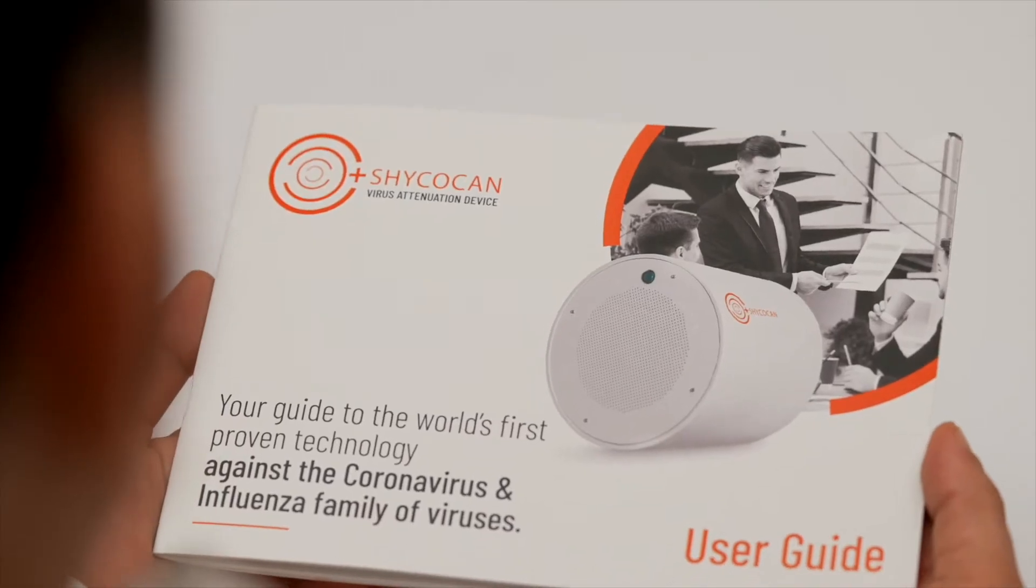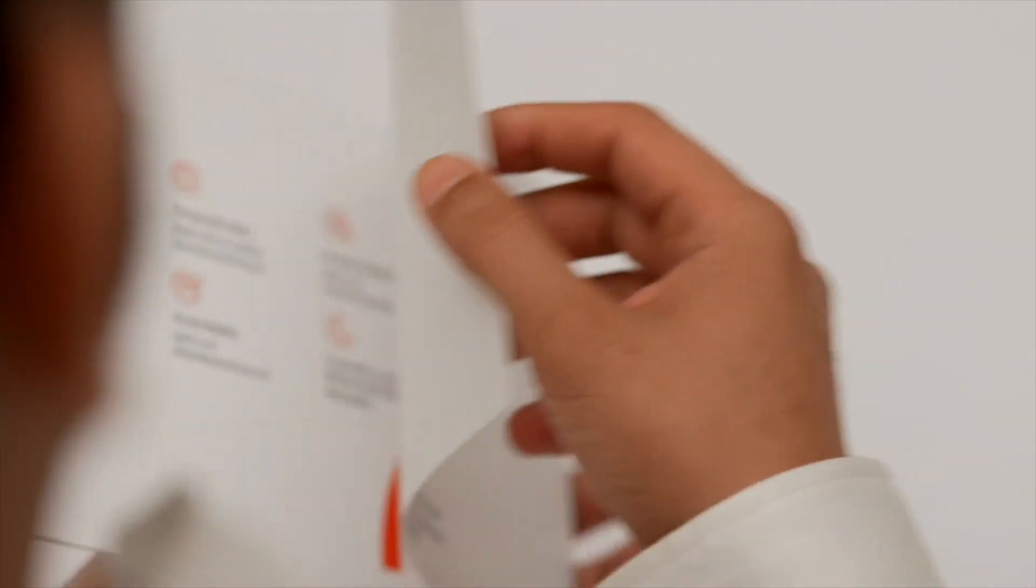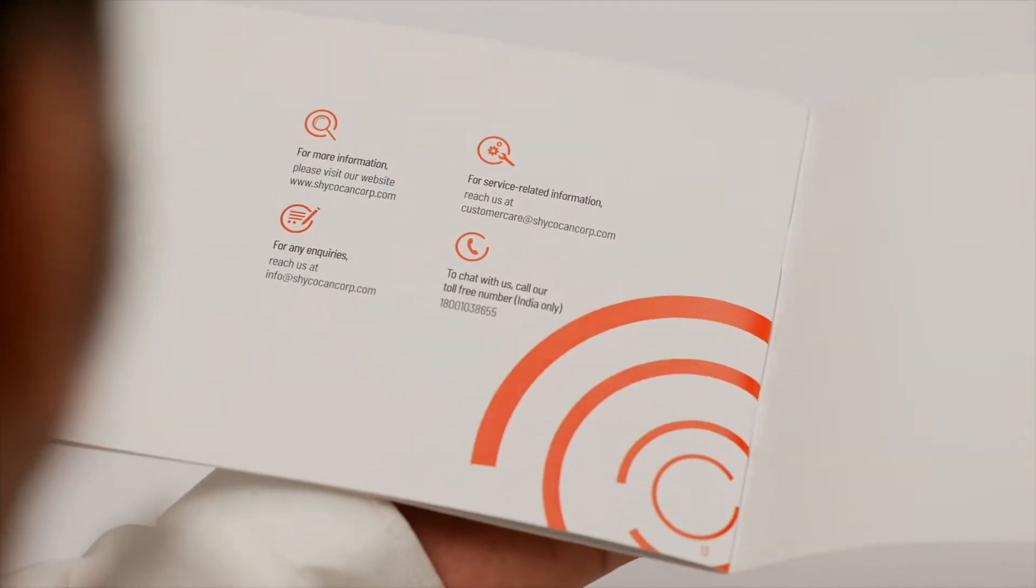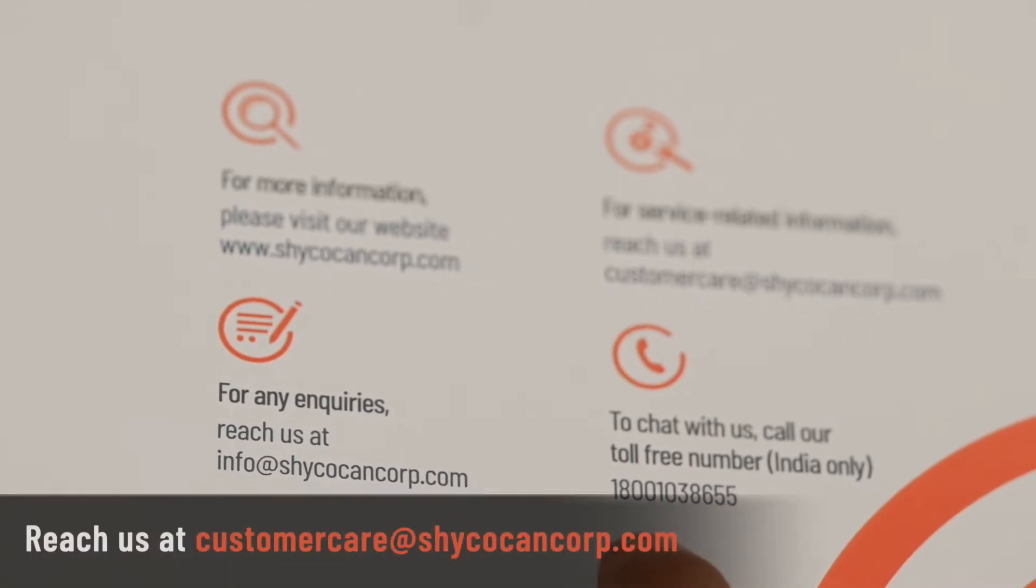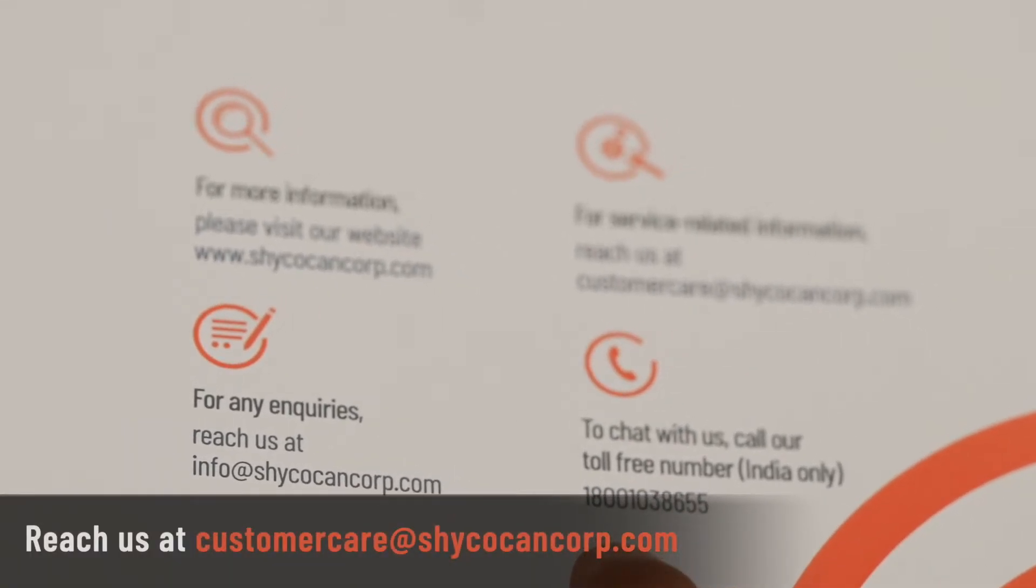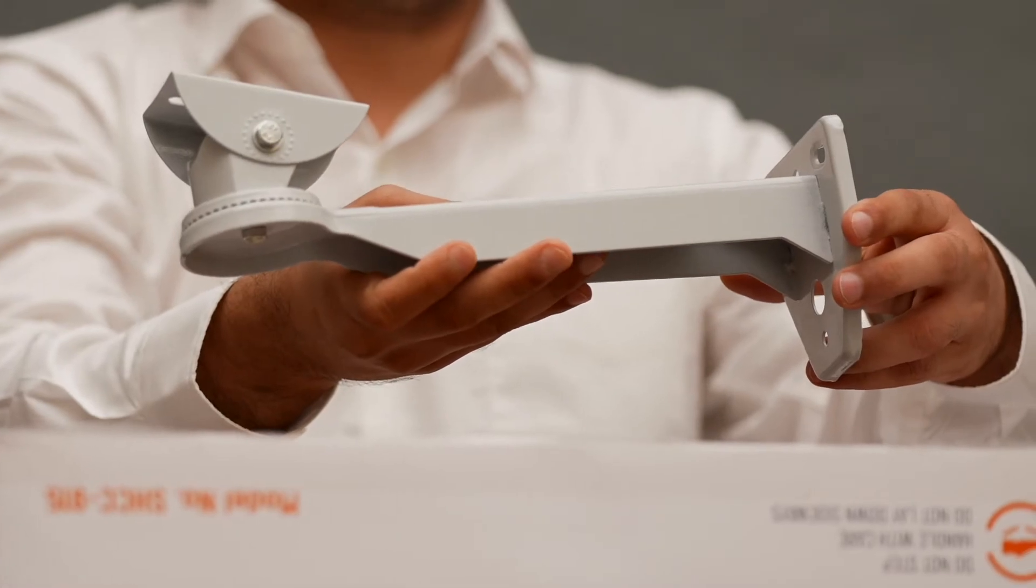Stay calm and reach out to the Shagokan customer service team using the details provided in the user guide. They will help you out at the earliest so your protective shield is never down. Using the wall mounting bracket and screws provided, the Shagokan needs to be installed between seven to ten feet above the ground.